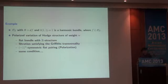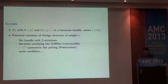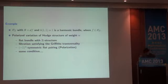Another more non-trivial and more interesting example is given by polarized variation of Hodge structures. A polarized variation of Hodge structures is one of the most fundamental objects in modern mathematics. For example, they appear as a Gauss-Manin connection of a smooth family, like a projective manifold. A polarized variation of Hodge structures is a flat vector bundle with real structure, with filtration satisfying Griffiths transversality, and some skew-Hermitian pairing called polarization. And it is one of the most important classes of harmonic bundles.